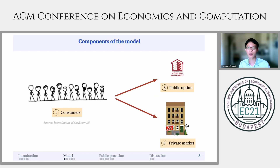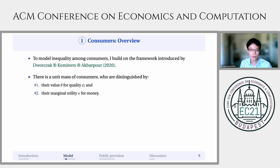The model consists of three separate components, which I will zoom in on sequentially. First, there's a unit mass of consumers. Second, there's a private market for the good. And finally, there's a public option which the designer designs. To model inequality among consumers, I build on the framework introduced by Dvokchak, Commoners, and Agbapur.